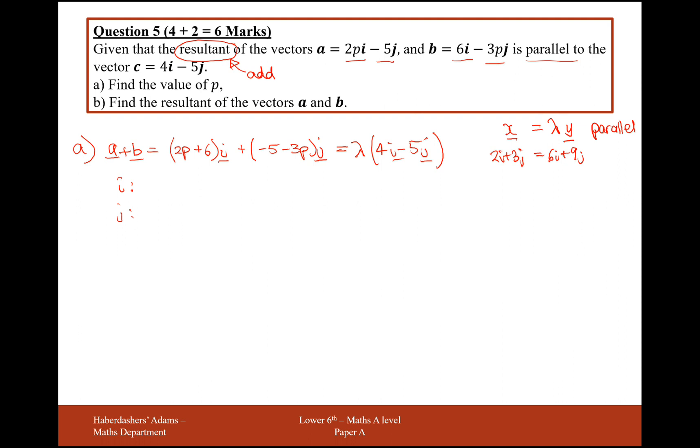What I've got on the left-hand side here for i is 2p plus 6. And on the right-hand side, I've got 4 lambda. And for the j components, that's my first simultaneous equation. For the j component, I've got minus 5 minus 3p equal to minus 5 lambda.